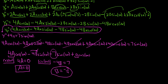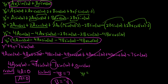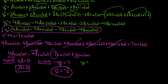Now we have A and B. Y_P was AX sine 2X plus BX cosine 2X. Since A is 0, Y_P is just going to be negative 7 fourths X cosine 2X. What a lot of work for Y_P — that was really the bulk of the problem.